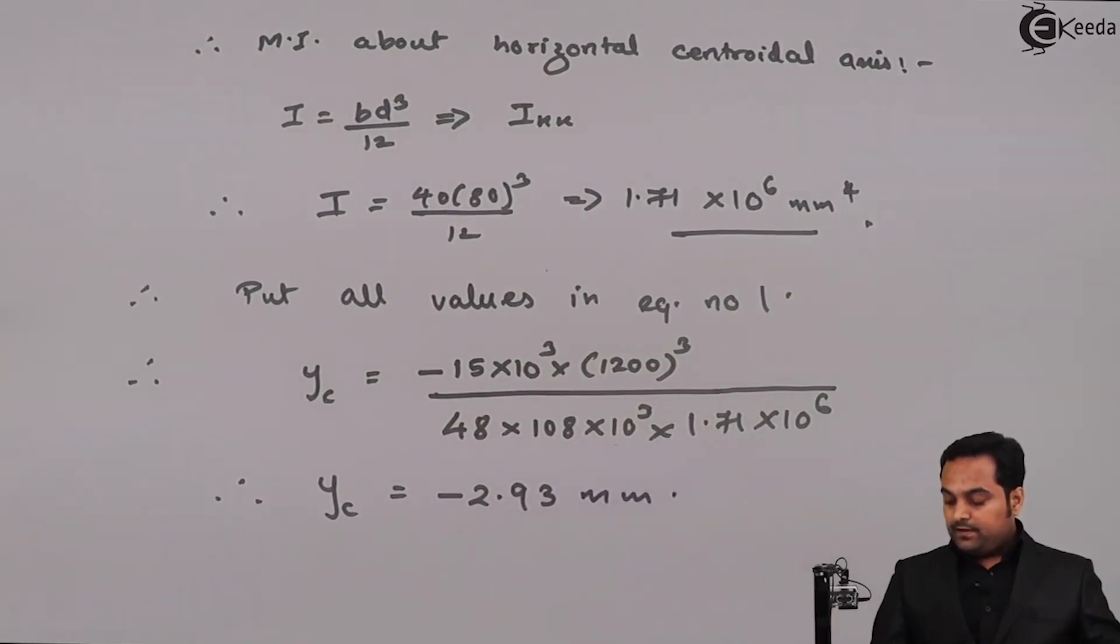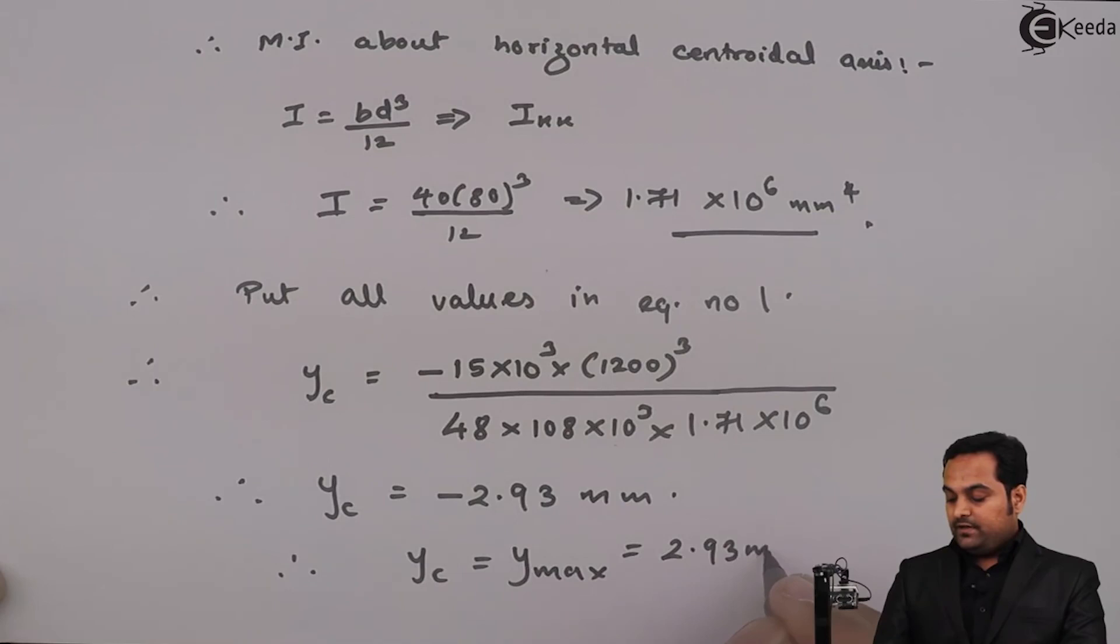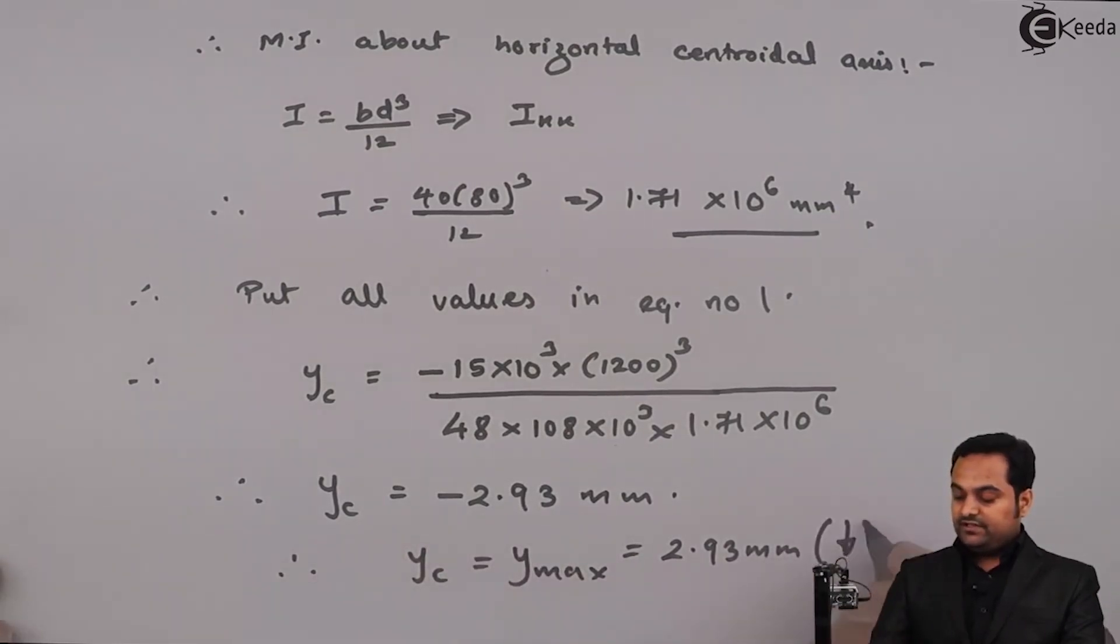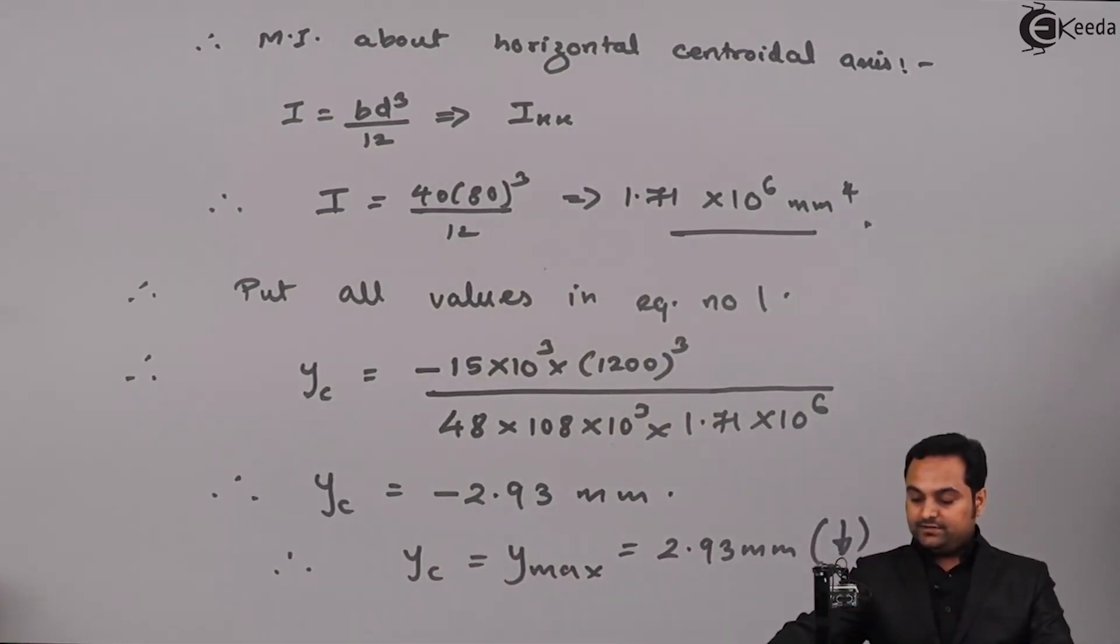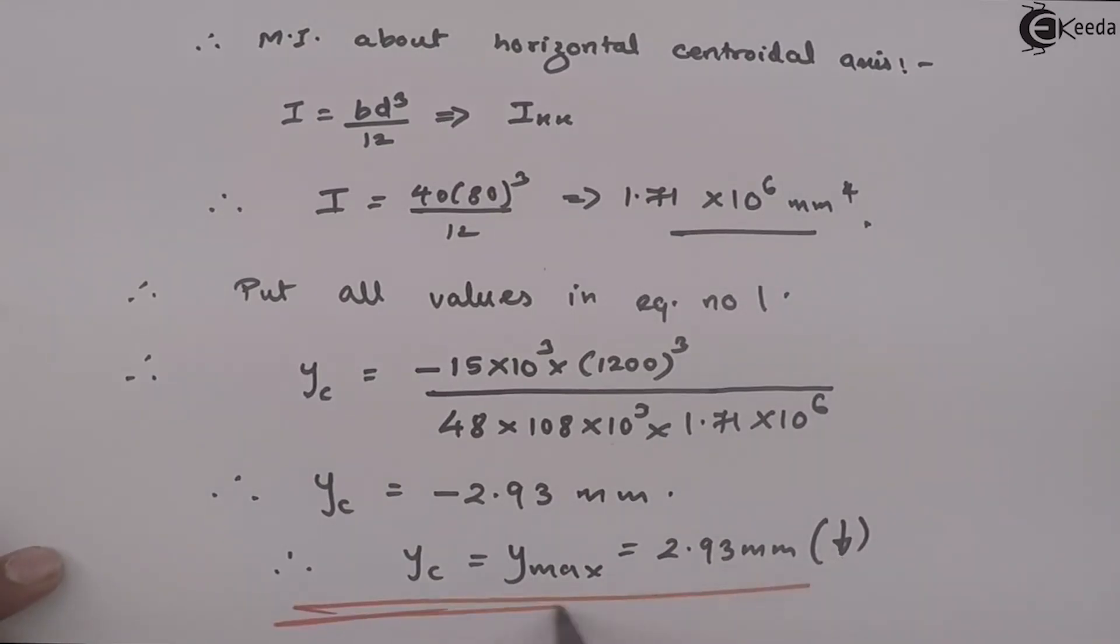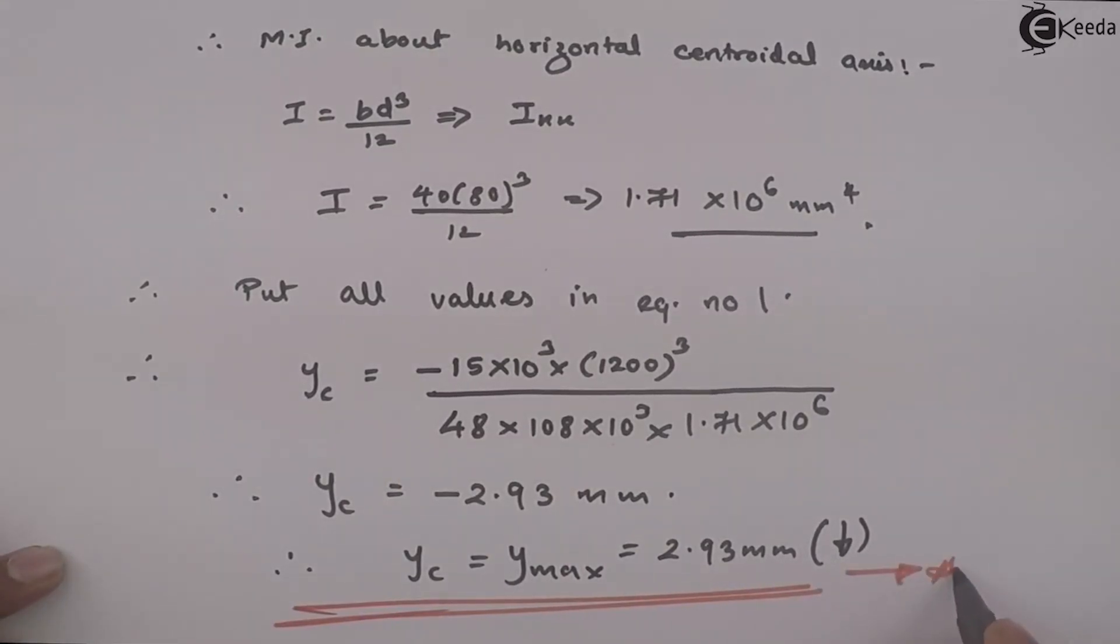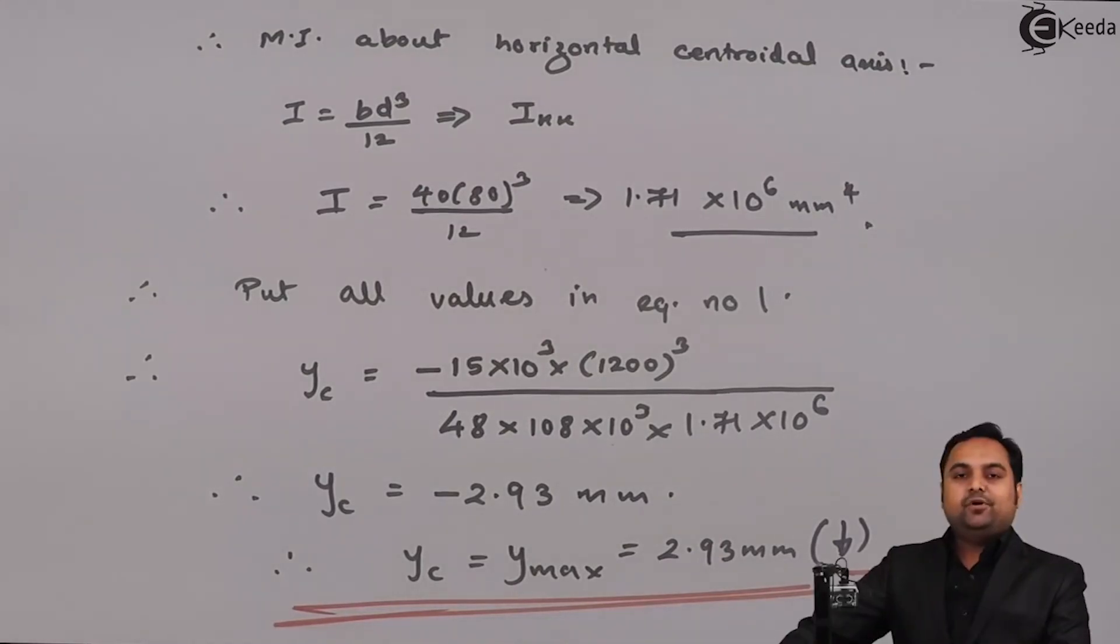And therefore I can say y_c is equal to the maximum deflection, that is 2.93mm. Since it is negative, it means the deflection is acting in the downward direction. And so in this question we have found out the value of maximum deflection, and with this we complete the problem.